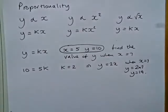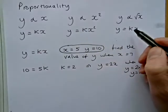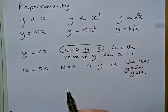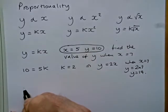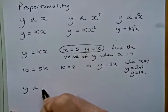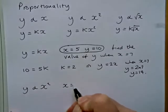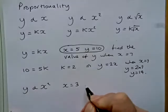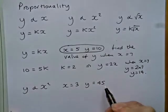And for the rest of the questions it's really a similar process just dealing with different equations, y equals kx squared and y equals k root x. So we'll look at y equals kx squared. So if y is proportional to x squared and we're given the information that x equals 3 and y equals 45, I'll show you how to find k.